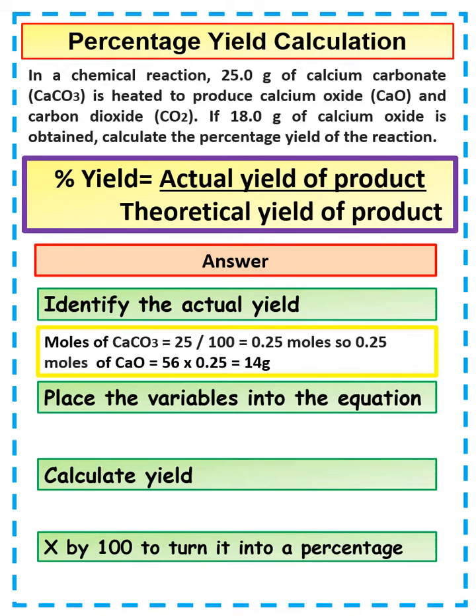We can see here, it's a one-to-one reaction. So if we've got 0.25 moles of calcium carbonate, we're also going to get 0.25 moles of calcium oxide.